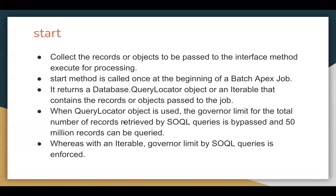When an Iterable is used, governor limits for SOQL queries are enforced. If you use QueryLocator, the SOQL query limit is bypassed and 50 million records can be queried. So those are the key differences between using QueryLocator versus Iterable in the start method.